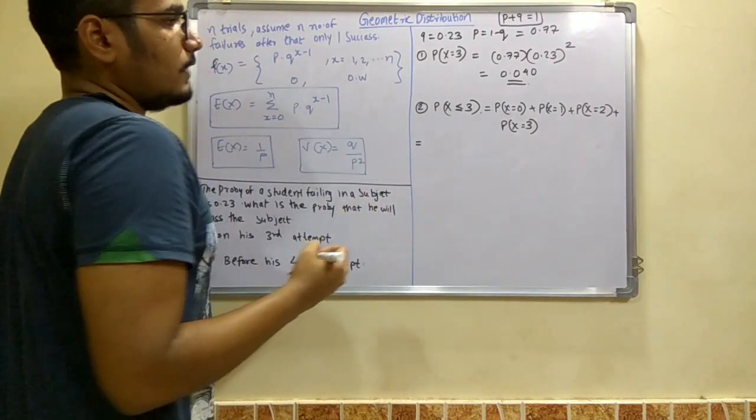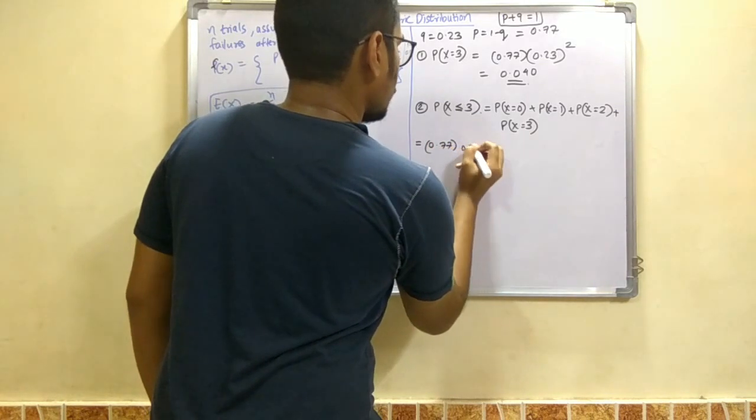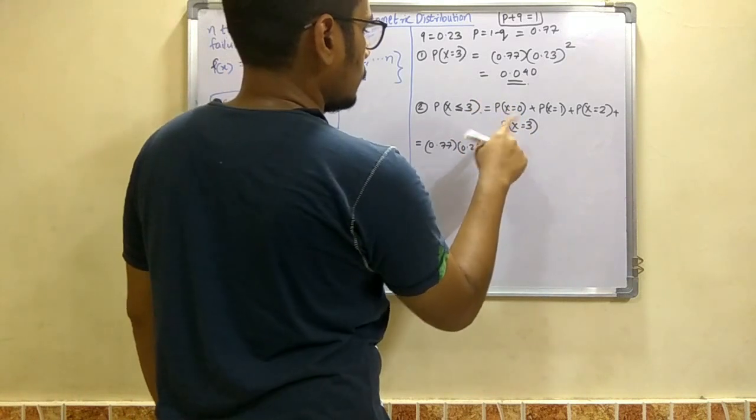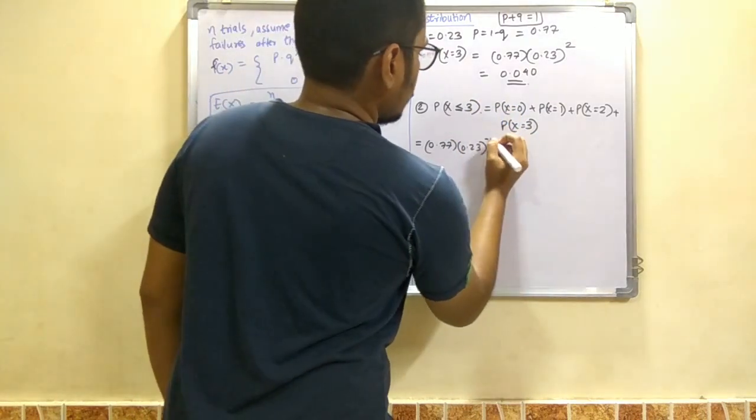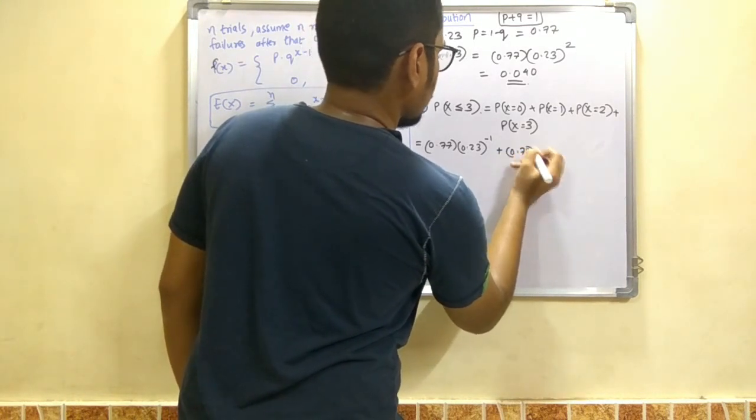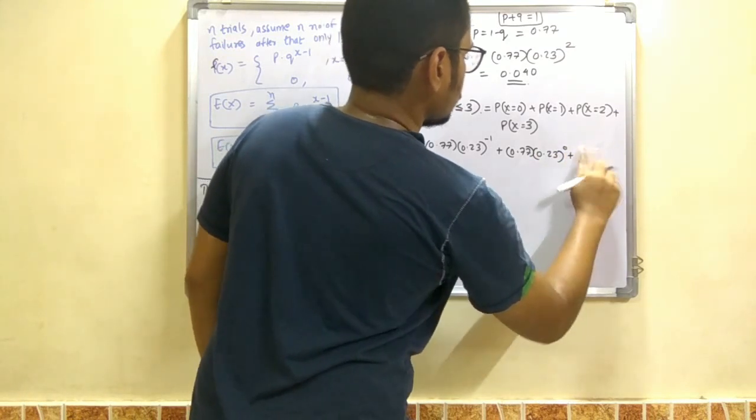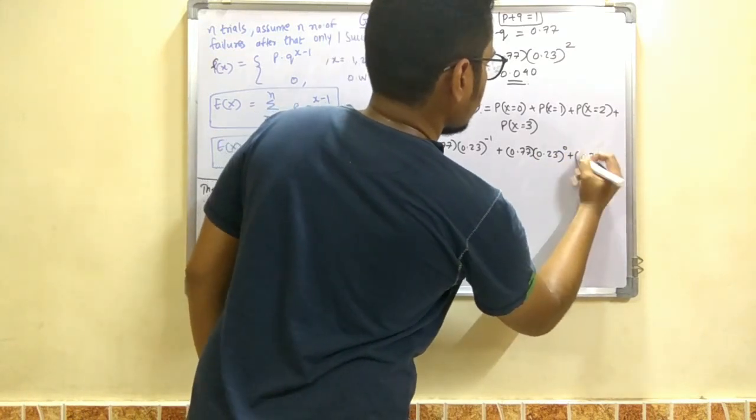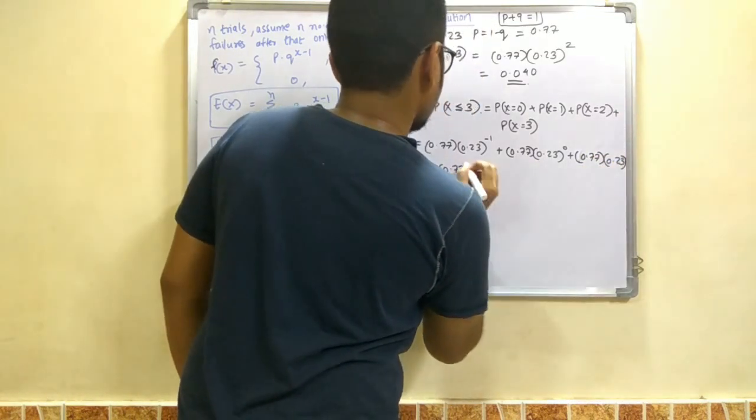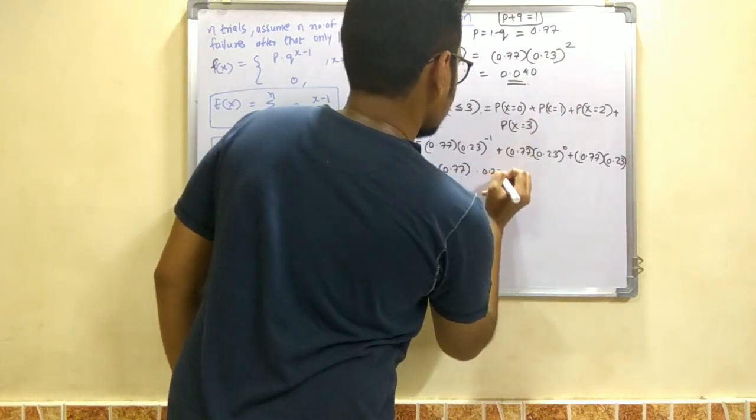Next we just have to put the values in this. So it will be the same p, q values: 0.77 into 0.23 raised to x minus 1. That is x in this case is 0 minus 1, that is minus 1. Plus probability of this will be 0.77 into 0.23 raised to 0. Plus this would be 0.77 into 0.23. And this would be 0.77 into 0.23 square.